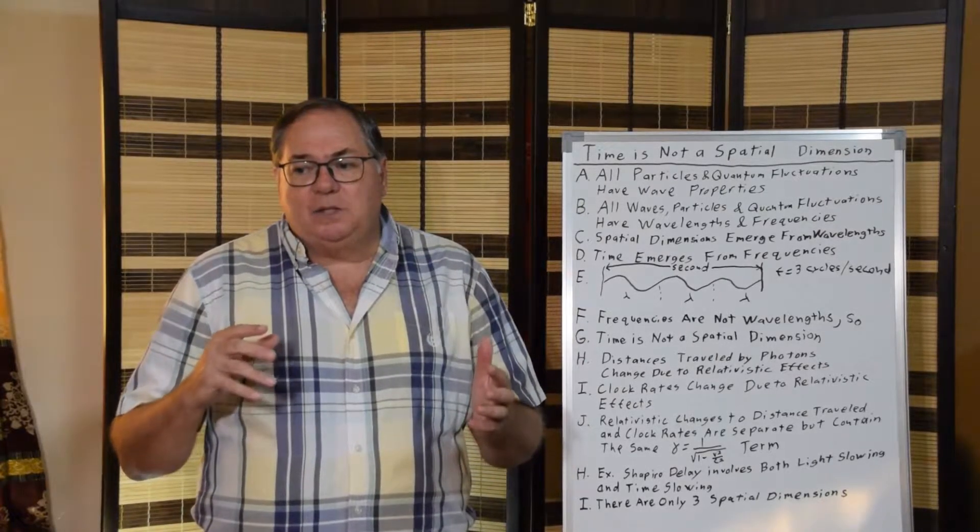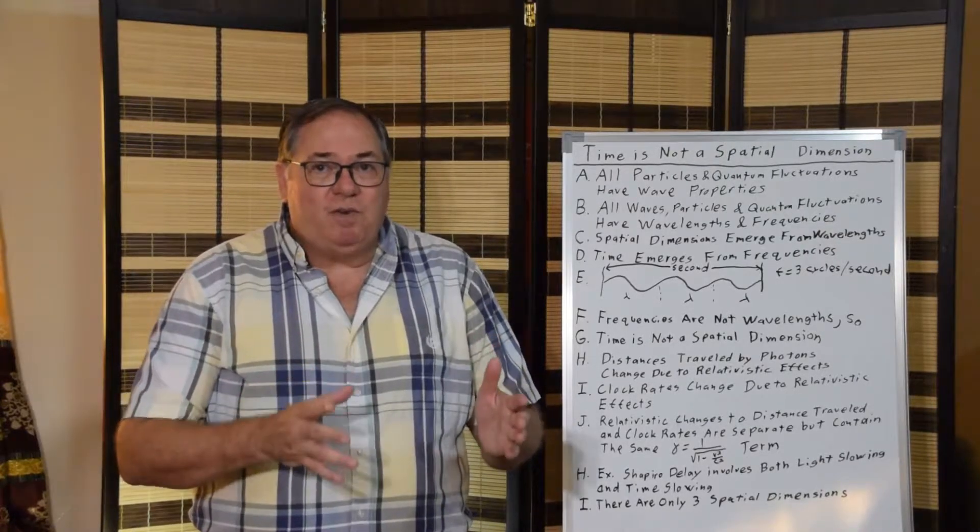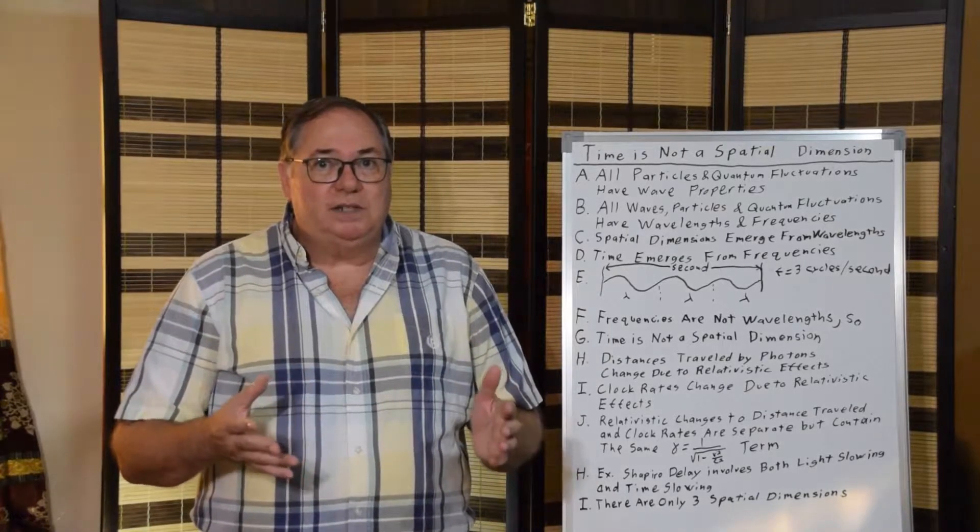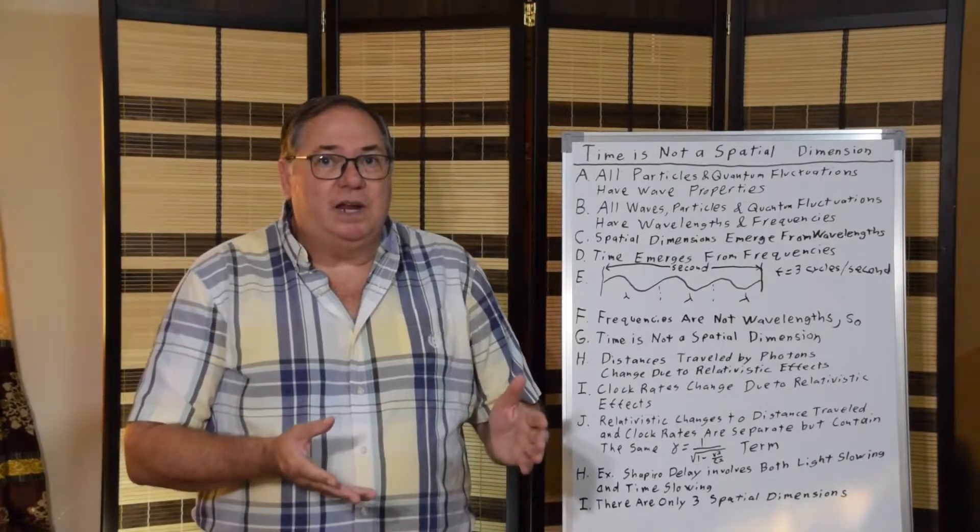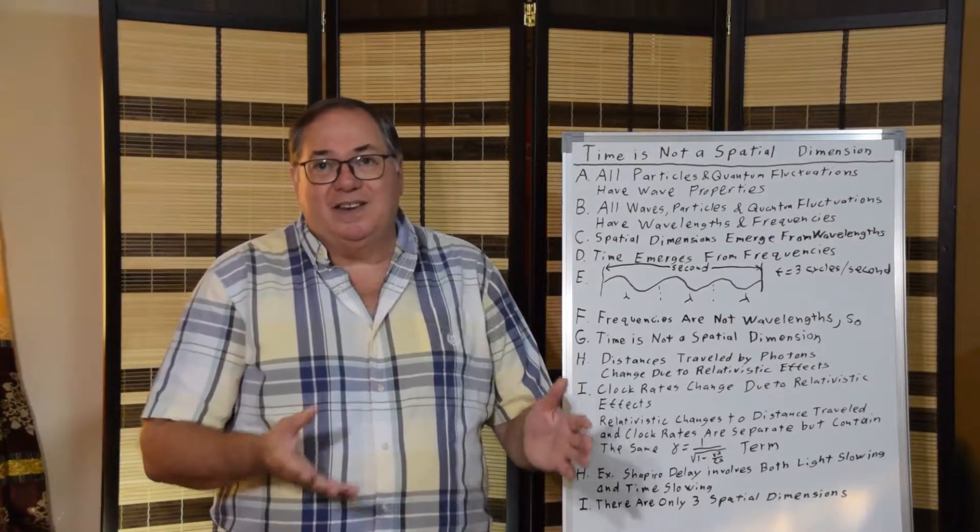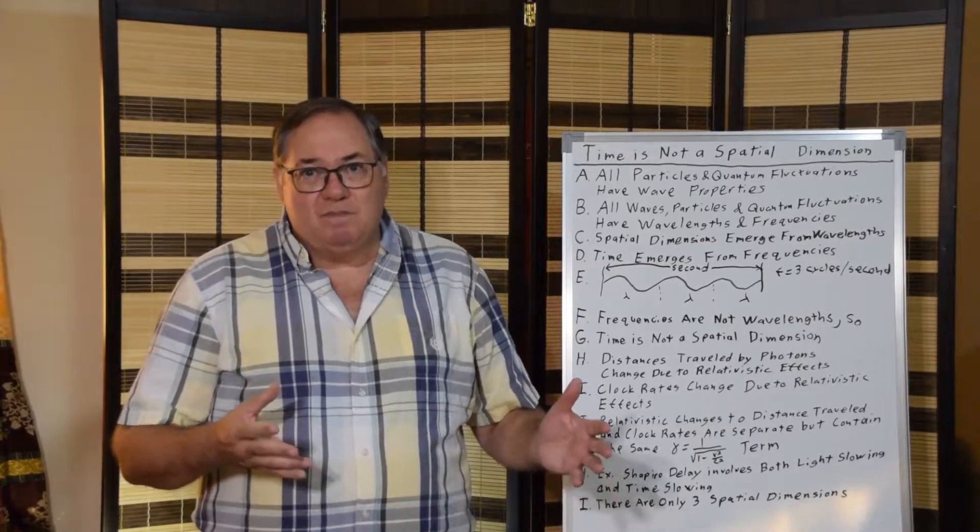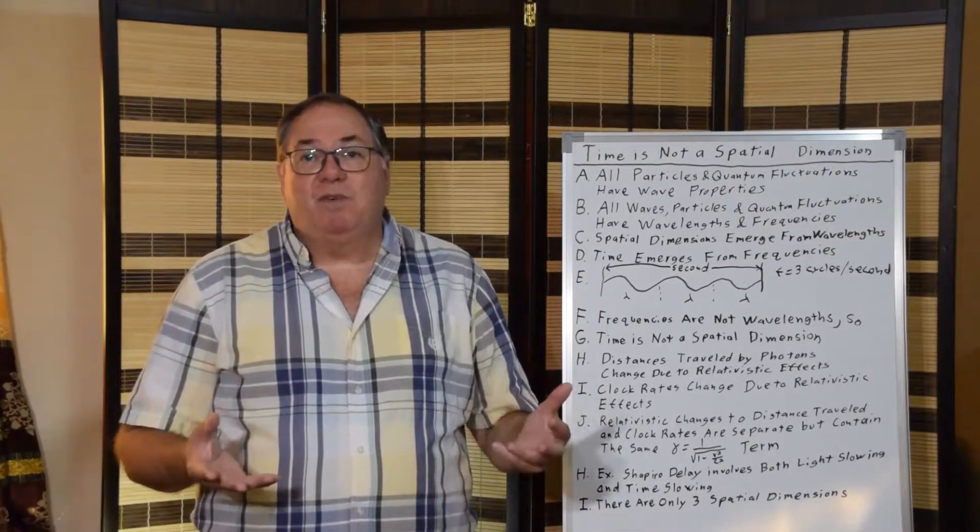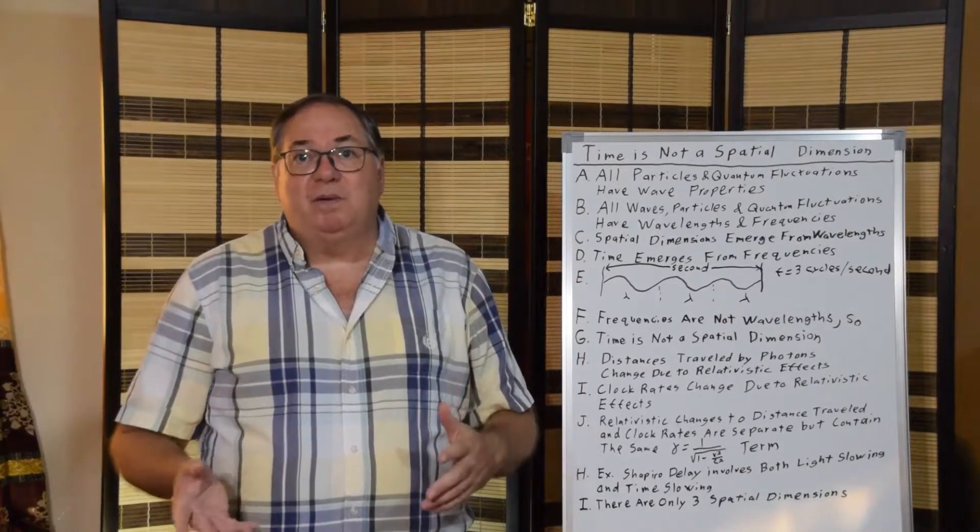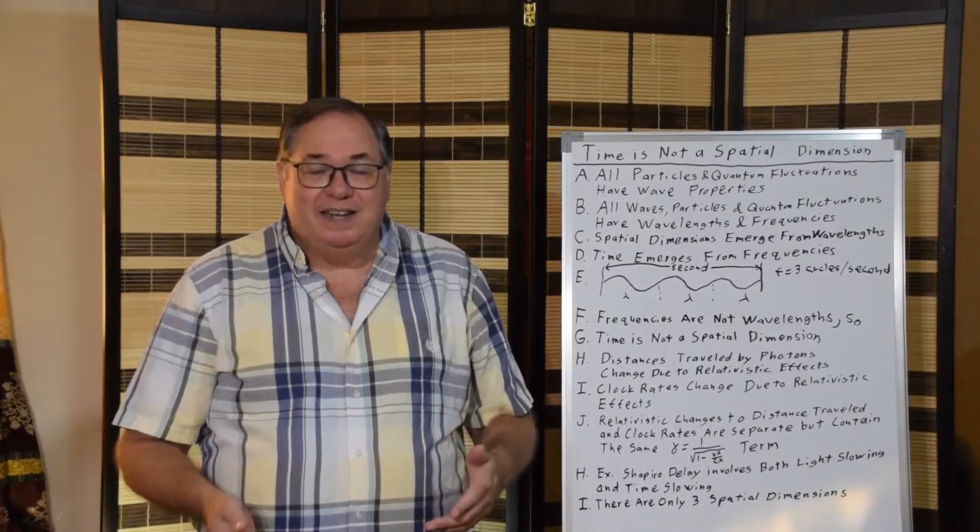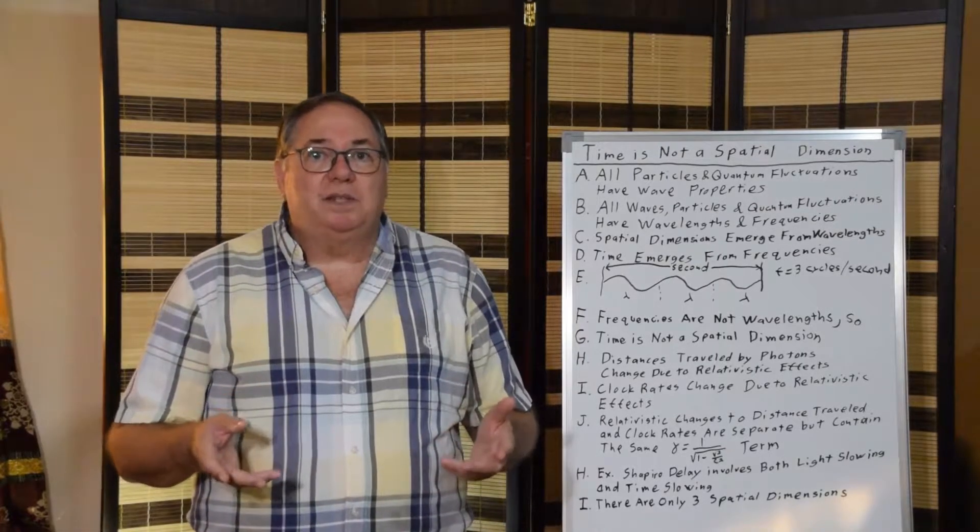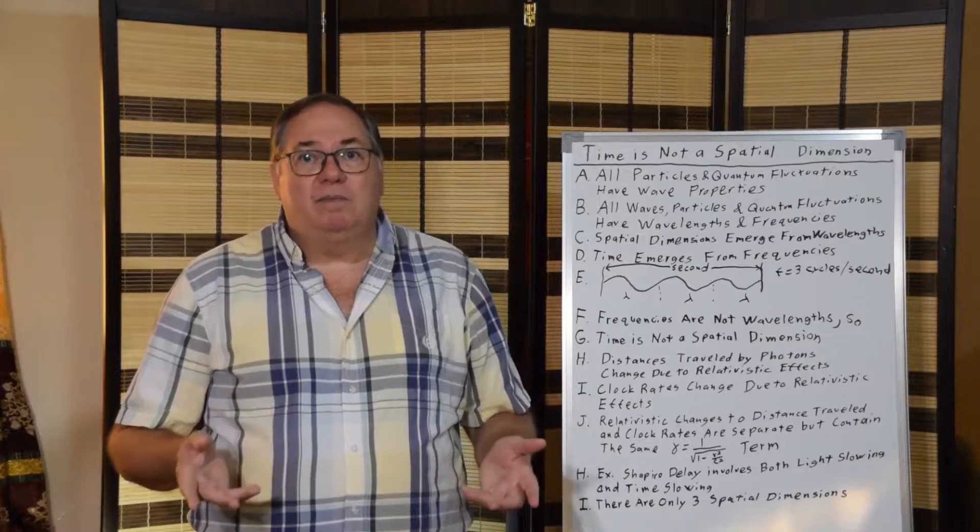And spatial dimensions emerge from the wavelengths. The wavelengths from the quantum fluctuations or quantum field are the most elementary physical emergence of spatial dimensions and distances. That's where they first appear. And time emerges from frequencies. Frequencies are cycles per second. You don't have frequencies without time. So time is an expression of the quantum field, of quantum fluctuations. Time is an emergent property of the quantum field.